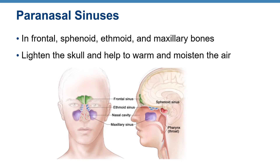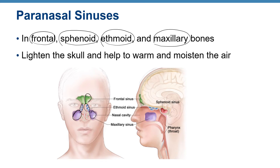Paranasal sinuses are spaces inside the frontal, sphenoid, ethmoid, and maxillary bones. These cavities lighten the skull and help warm and moisten the air.